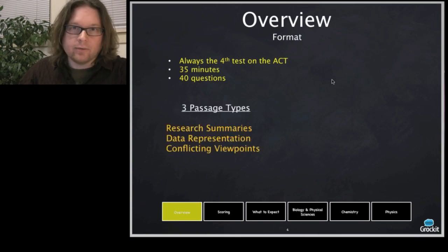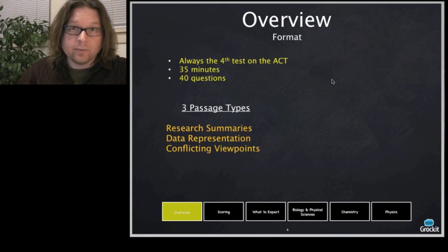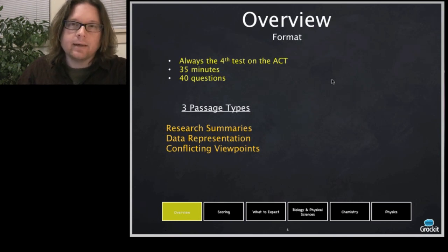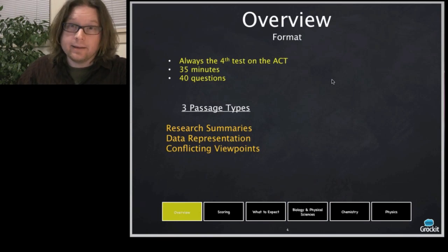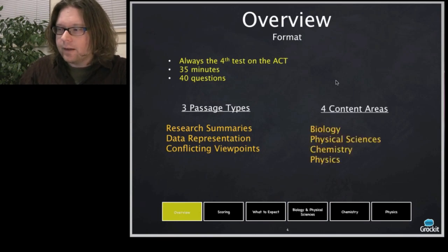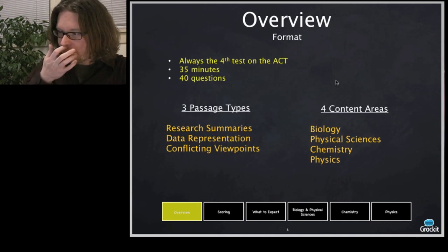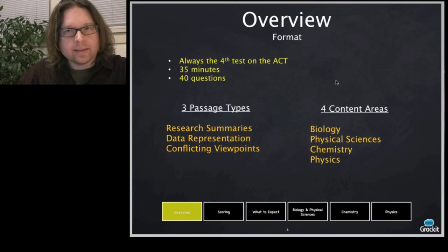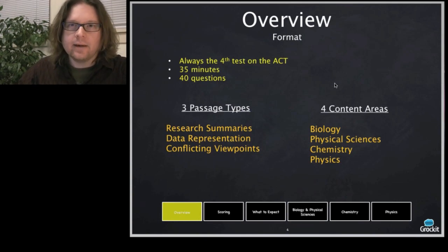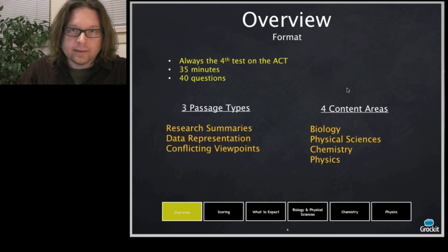There are three main passage types: research summaries, data representation, and conflicting viewpoints. We'll cover each of those in the lessons after this one. And four content areas: biology, physical sciences, chemistry, and physics. You can expect to see a mix of all of these, and you're not expected to have taken coursework in them. You don't have to remember prior knowledge — you need to be paying attention to the passages.